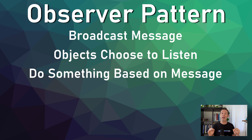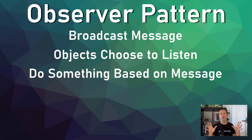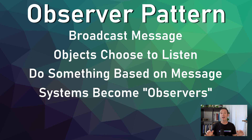The critter no longer cares or is aware of the UI element or the achievement system. If those systems change or aren't in the scene, nothing breaks. If new systems want to be aware of when a critter is killed, all they have to do is listen for a critter to broadcast that message. And this is huge — this turns the UI and the achievement system into observers of the critter. The Observer Pattern is so useful that C# has essentially baked it into the language, making the implementation quick, but not always super clear or intuitive.